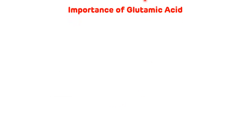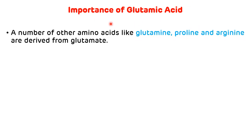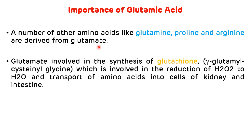Now, importance of glutamic acid. The first importance is it is important for the synthesis of various other amino acids like glutamine, proline, and arginine — these three amino acids are derived from glutamate. The second importance of glutamic acid is it is involved in the synthesis of one tripeptide called glutathione, another name of which is gamma-glutamyl cysteinylglycine.